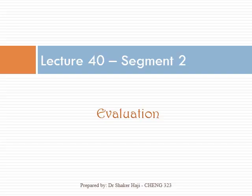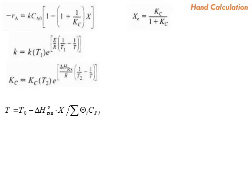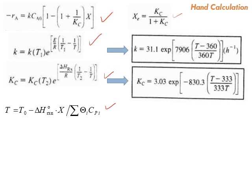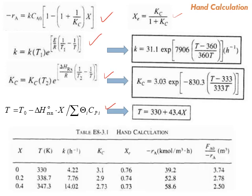Let's continue solving the previous example. We want to solve the problem with hand calculation. We have all the required equations: the rate law combined with stoichiometry, the Arrhenius equation for k, the Van't Hoff equation for Kc, the temperature equation from the energy balance, and the calculated equilibrium conversion from Kc. You can substitute all the values and the parameters.